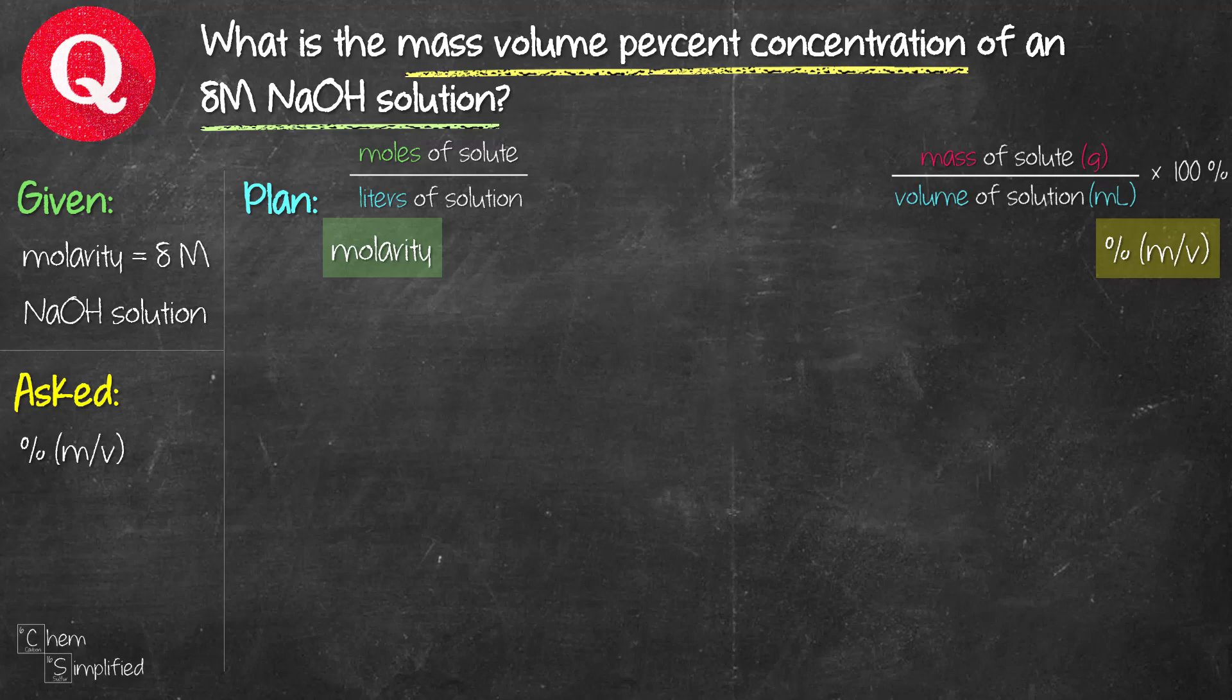We start with a formula for molarity that's moles of solute over liters of solution. And then the percent mass volume formula is mass of solute over volume of solution times 100. Now because this is mass over volume percent, there is a specific unit that we need to use. So for mass, it's going to be grams. For volume, it's going to be milliliter.